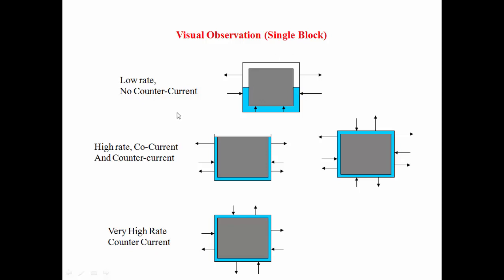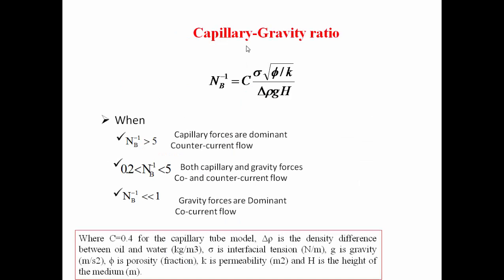At early time you will have co-current imbibition, transitioning later to counter-current imbibition when the block is fully surrounded. A dimensionless number — the Bond number — is used to calculate which type of flow dominates in the reservoir. The formula includes interfacial tension, viscosity, permeability, density difference (delta rho between oil and water), gravity g, and height H. Delta rho is the density difference between oil and water, sigma is the interfacial tension, g is gravity, and phi is the dimensionless number. This number determines which type of flow — capillary or gravity — will dominate in a given condition.